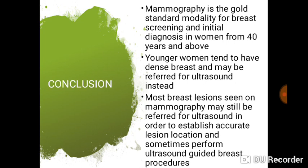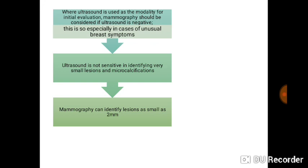Mammography is the gold standard modality for breast screening and initial diagnosis in women from 40 years and above. Younger women who tend to have dense breasts may be referred for ultrasound instead. Most breast lesions seen on mammography may still be referred for ultrasound to establish accurate lesion localization and sometimes to perform ultrasound-guided breast procedures such as biopsy. Where ultrasound is used as the modality for initial evaluation, mammography should be considered if ultrasound is negative, especially in cases of unusual breast symptoms. Ultrasound is not sensitive in identifying very small lesions and micro-calcifications, but mammography can identify lesions as small as 2 mm — that makes it the gold standard.